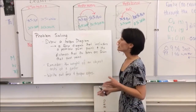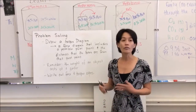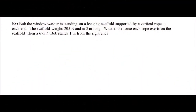Now I'm going to transition into an example of an actual equilibrium problem. Bob the window washer is standing on a hanging scaffold supported by a vertical rope at each end. The scaffold weighs 205 Newtons and is 3 meters long. What is the force each rope exerts on the scaffold when a 675 Newton Bob stands 1 meter from the right end? The first thing we're going to do is draw a torque diagram, which includes a potential pivot point and the distances of forces acting on the object relative to that pivot point.